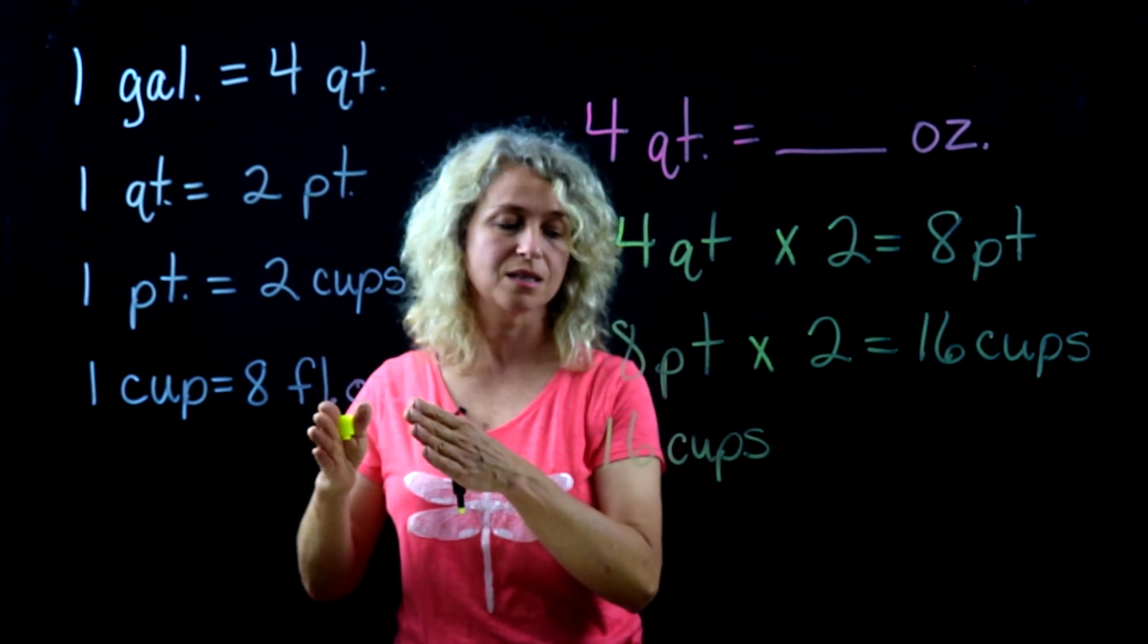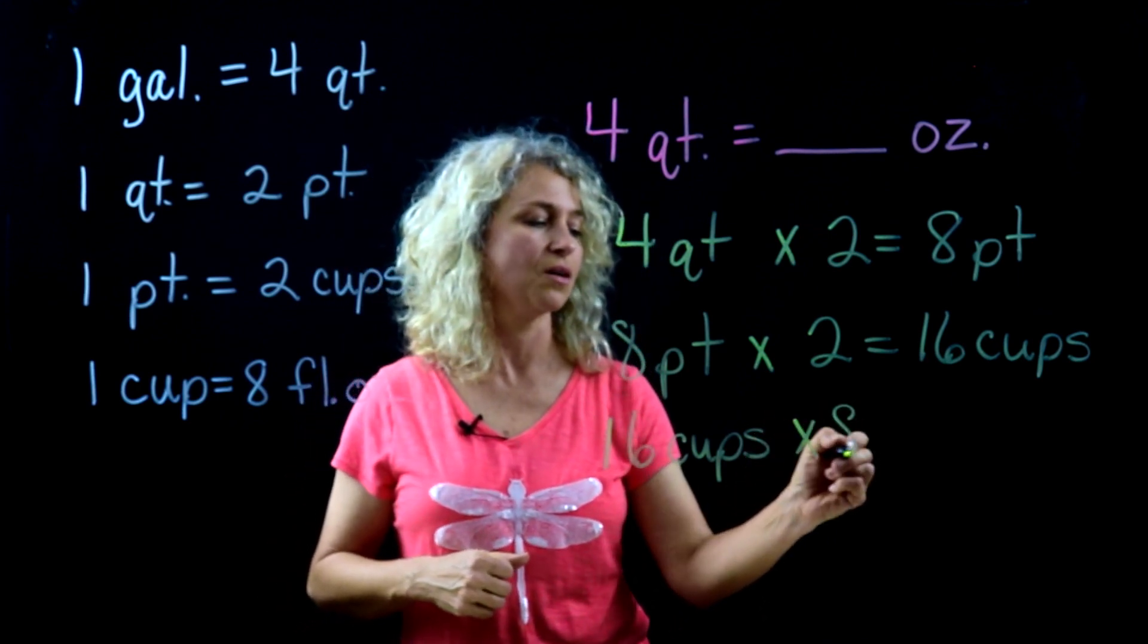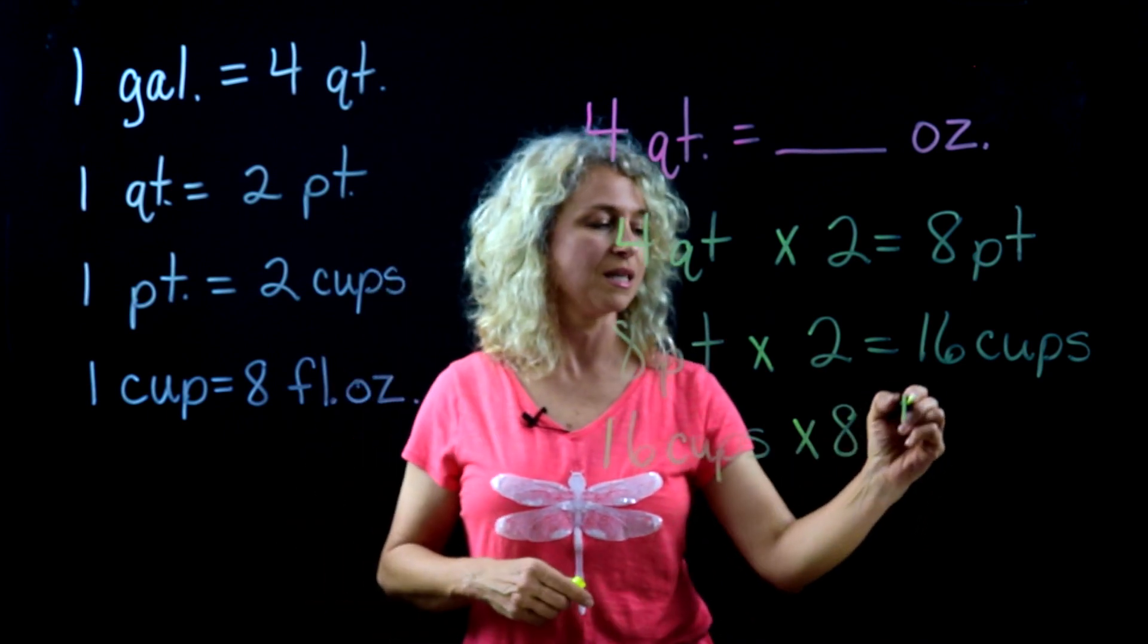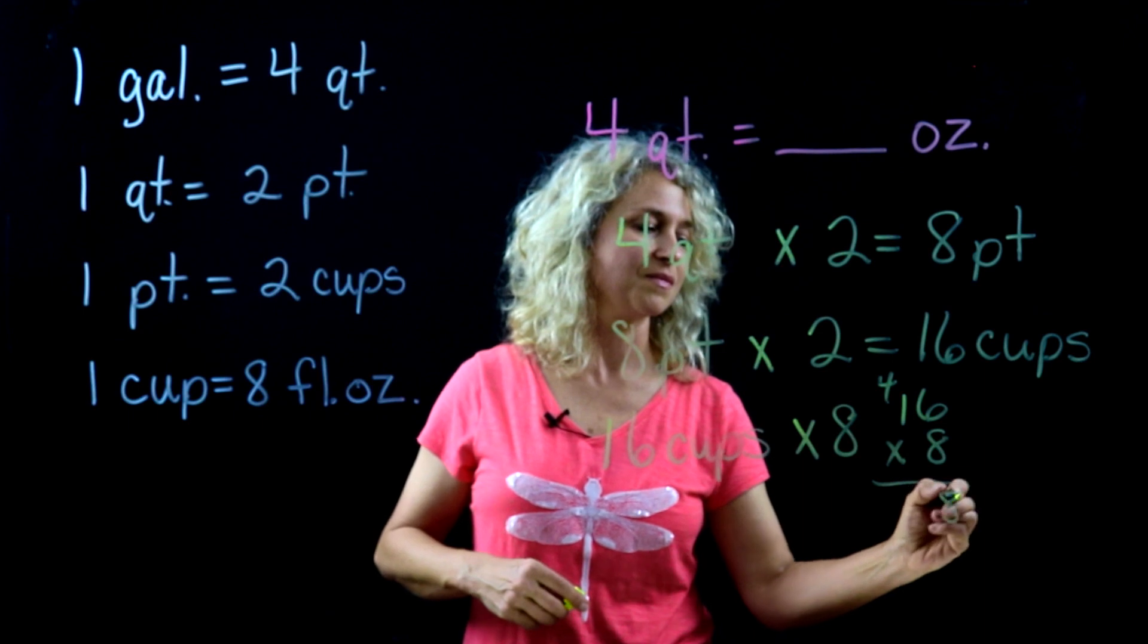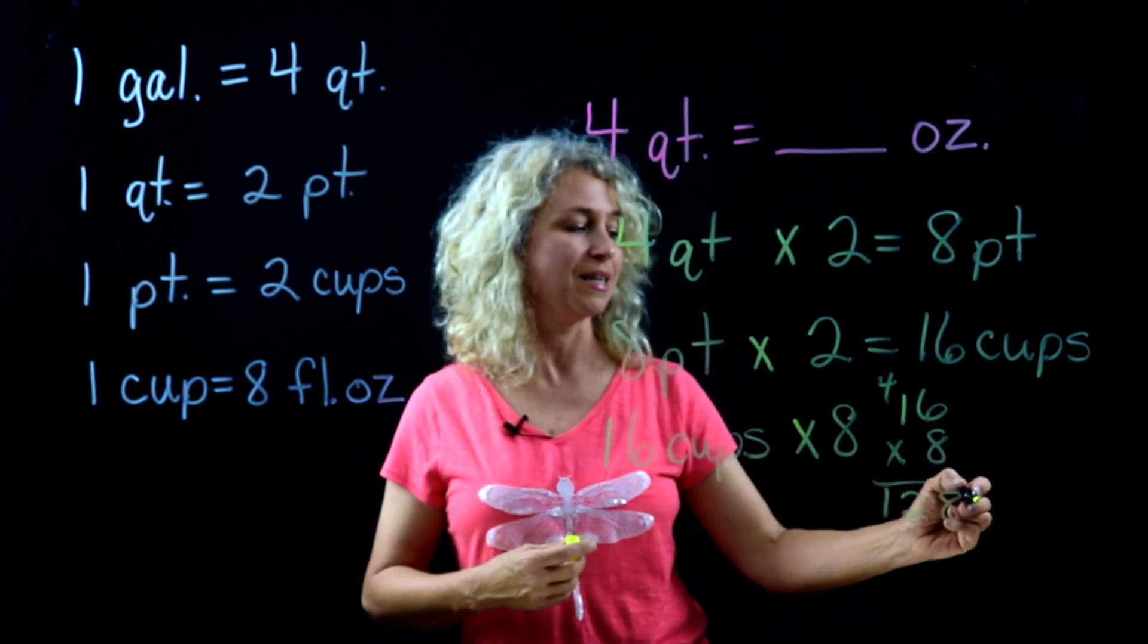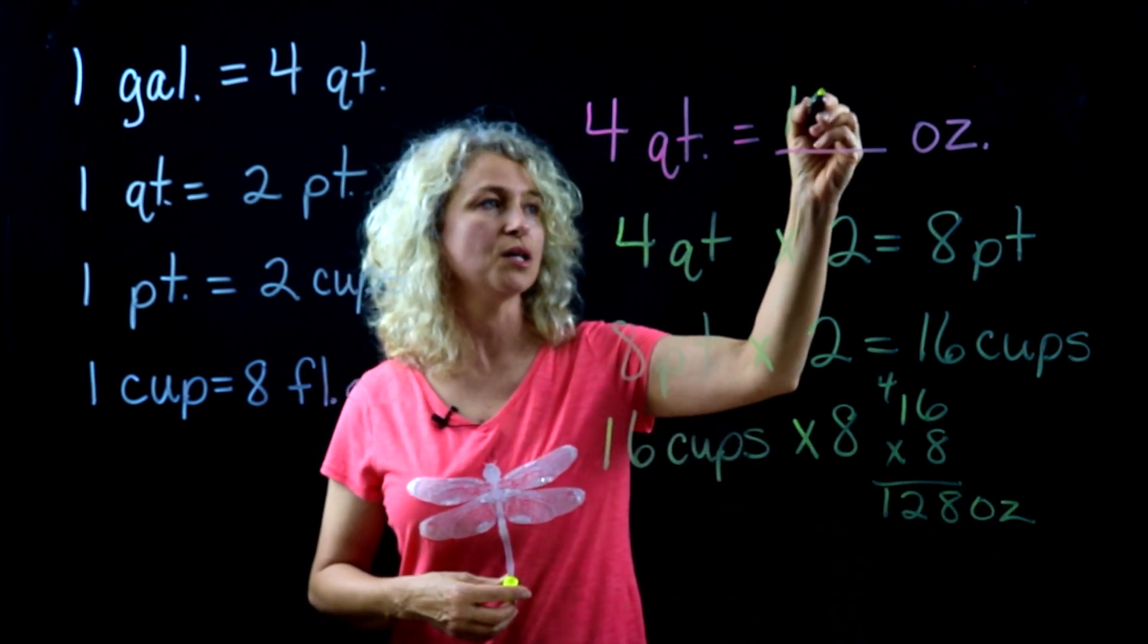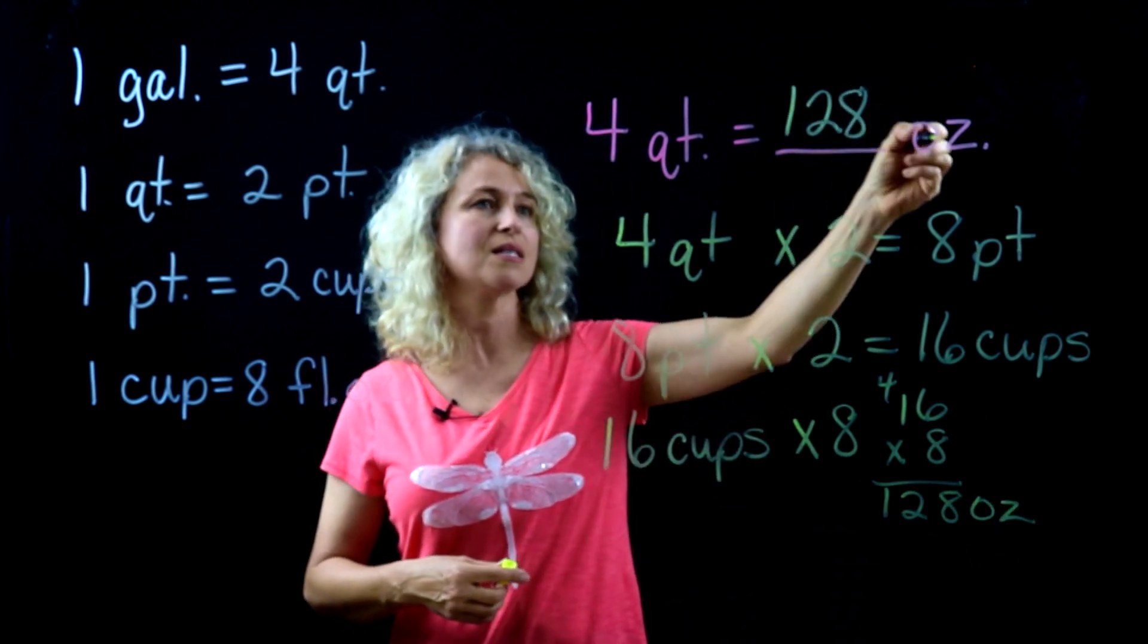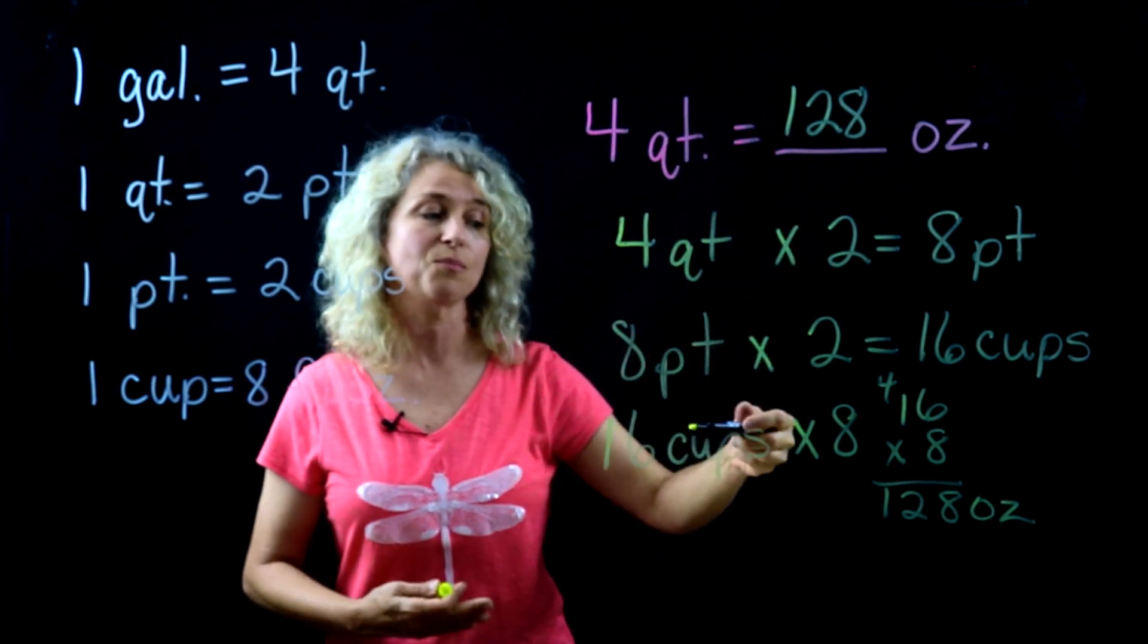So 16 cups, and we're changing the cups to fluid ounces. This is going to be times eight. So 16 times eight, which is 128. Now we can say ounces—128 ounces in four quarts.